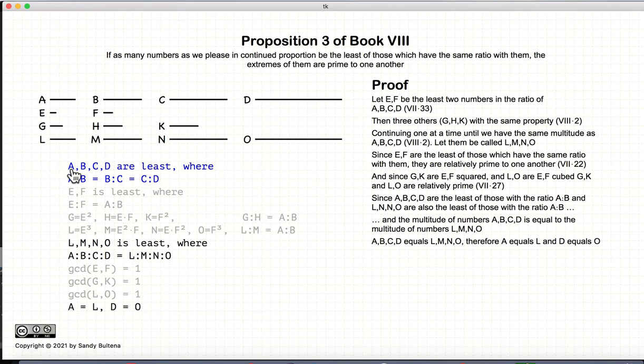And we started by saying that A, B, C, D are the least. So since A, B, C, D and L, M, N, O are also the least, they are the same numbers. So A is equal to L and D is equal to O.